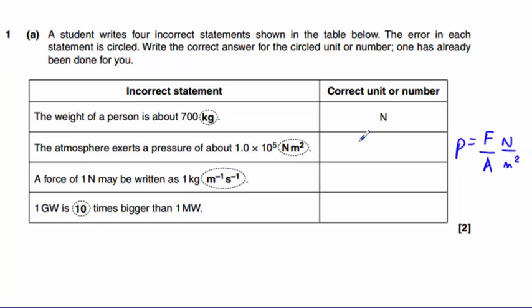Not newton meter squared. So that will be written as newton meters to the minus 2. Alternatively, I suppose you could write it as newton per meter squared. That would be correct as well.